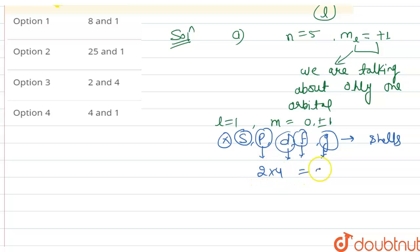So two into four, that is eight electrons. Eight electrons can be possible for that. And part second, the second part is having four quantum numbers.